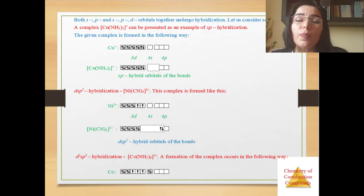Then DSP2 hybridization, example nickel cyanide. This complex is formed like this, you see here. And nickel cyanide DSP2 hybrid orbitals of the bonds.